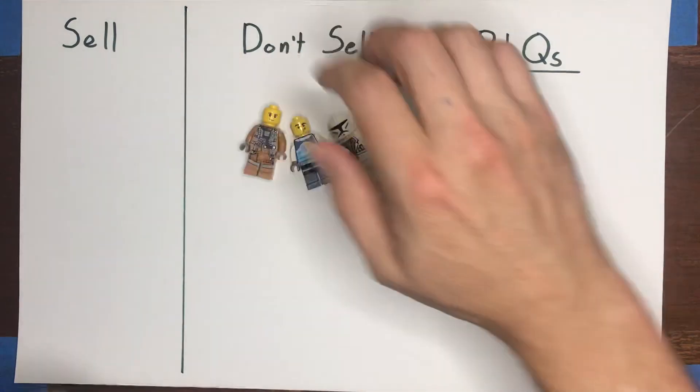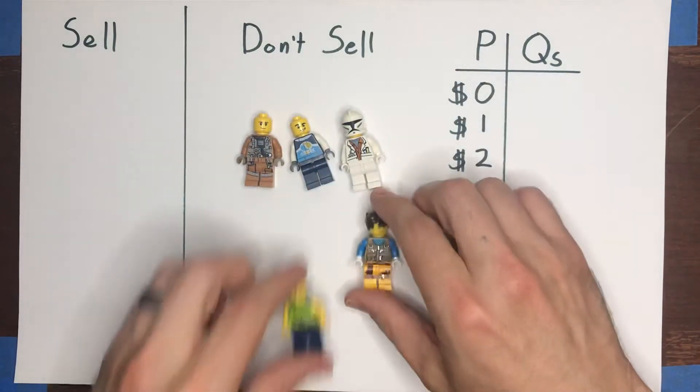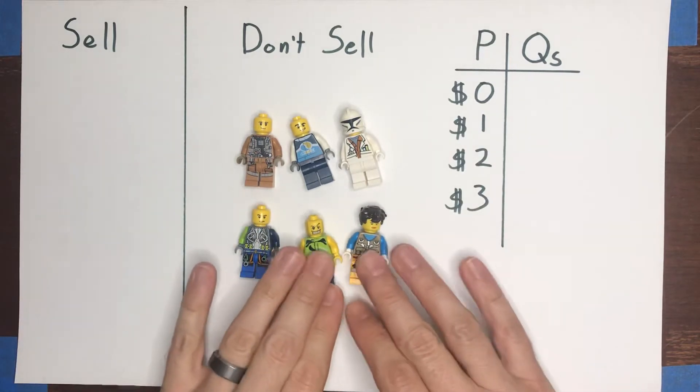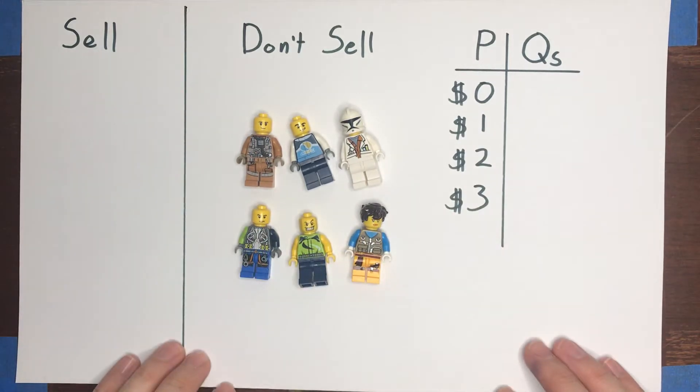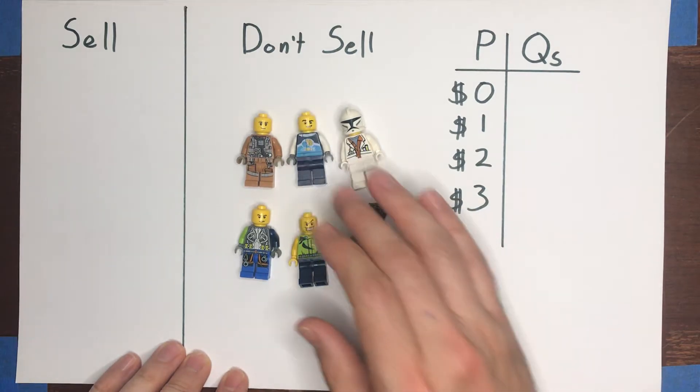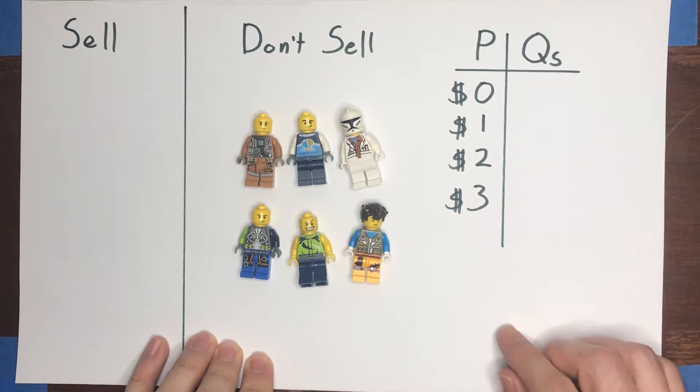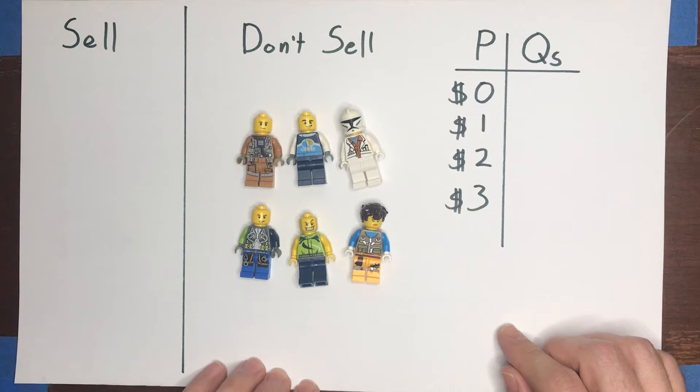So I'm gonna bring back out my Lego figures here. And in this example, instead of them being potential consumers, they are potential sellers. So imagine that each of these individuals has a can of Coca-Cola, a 16 ounce can of Coca-Cola. And now instead of calling out different prices and seeing who wants to buy or how many of them are willing to buy, we call out different prices and ask how many of them would be willing to sell their can.